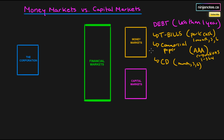Remember that the money market contains all debt. The capital markets, on the other hand, are made up of both debt and equity — which includes shares. The key difference is that the debt in the capital markets has a maturity of one year or more. Anything with a maturity of less than one year belongs in the money markets; capital markets only contain instruments with a maturity or holding period of one year plus.